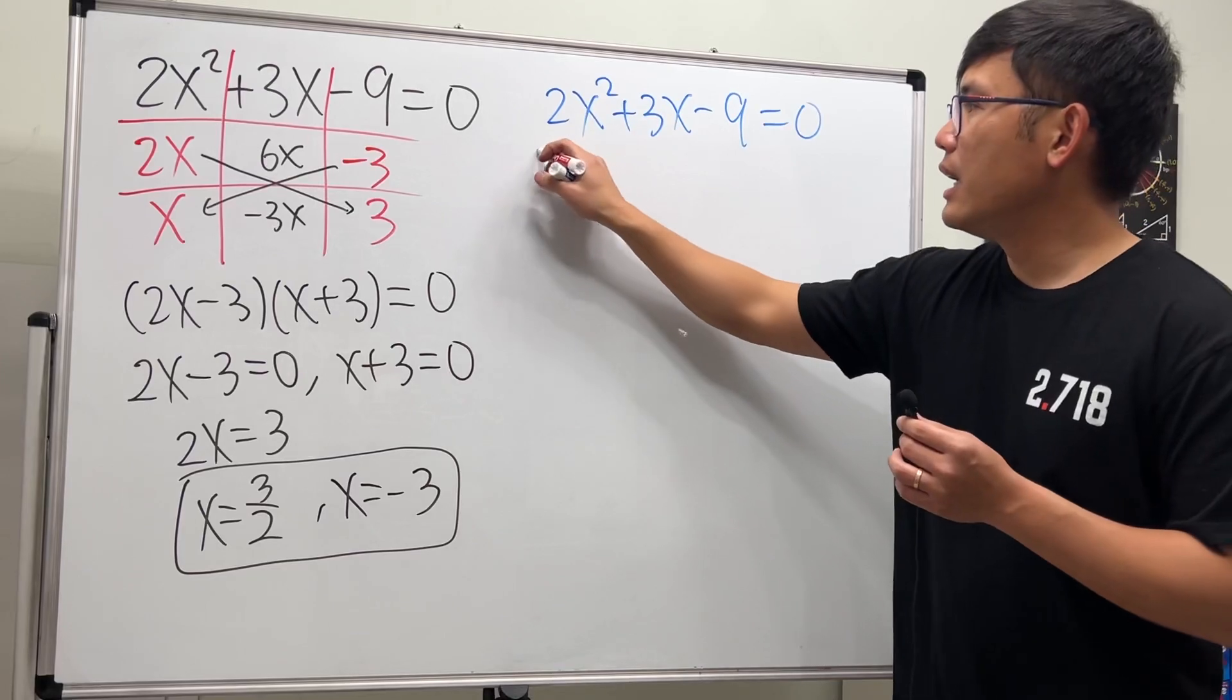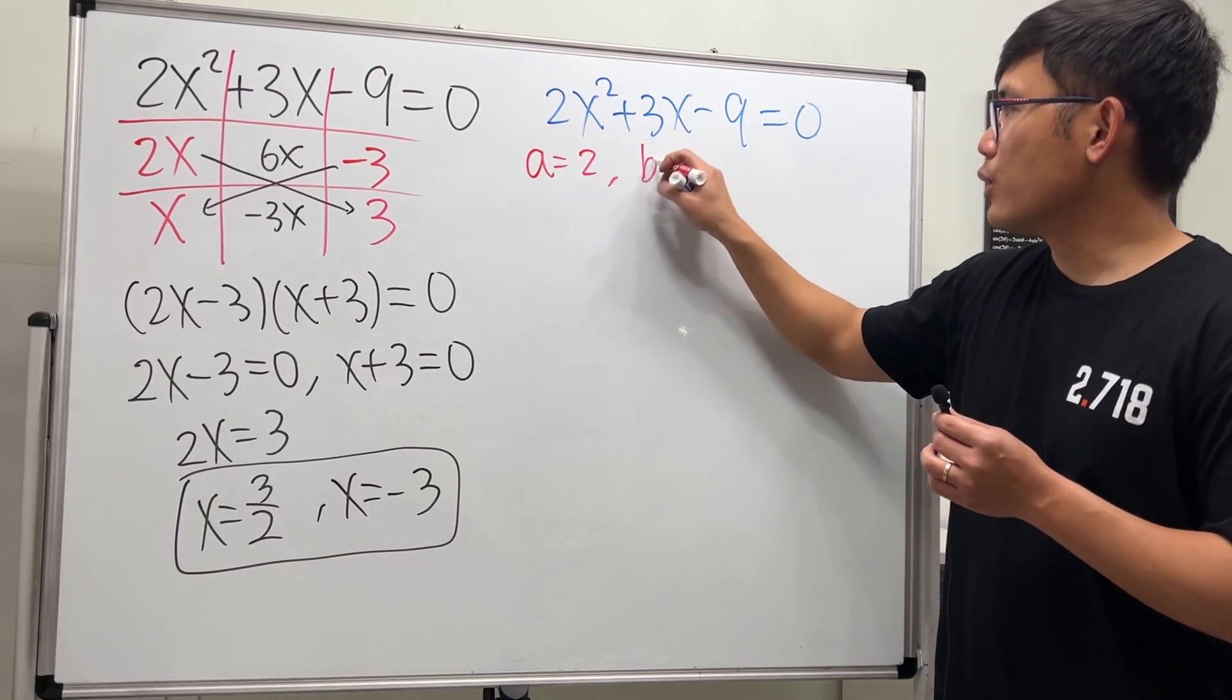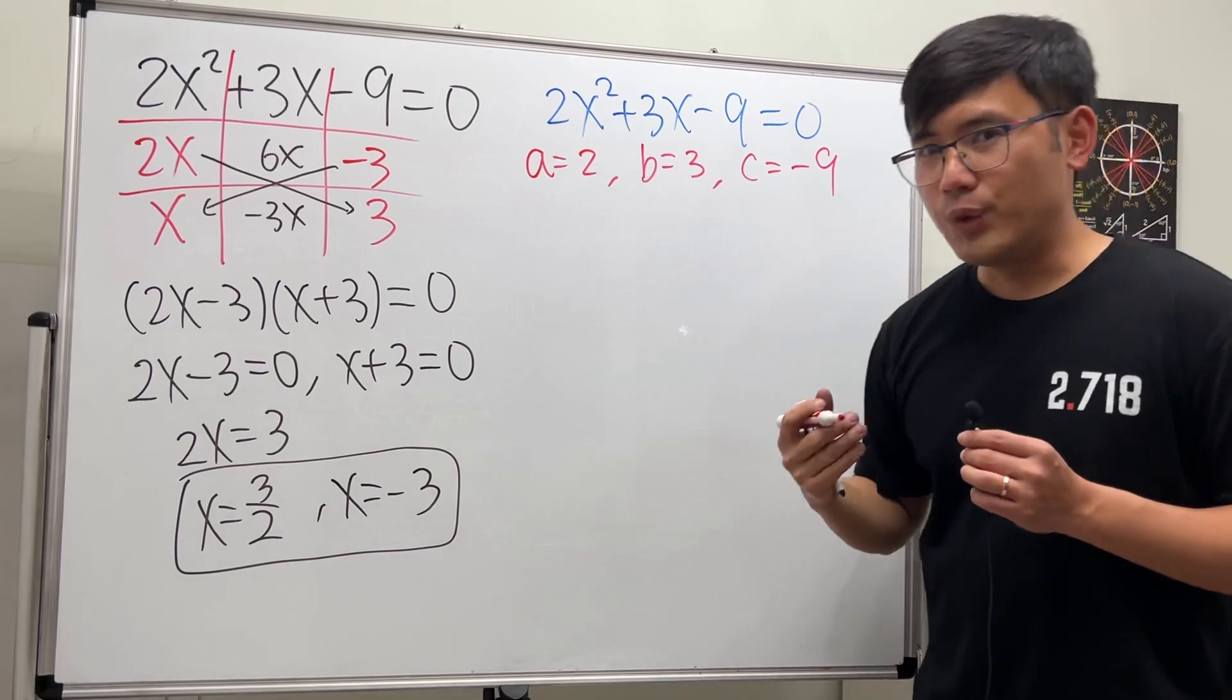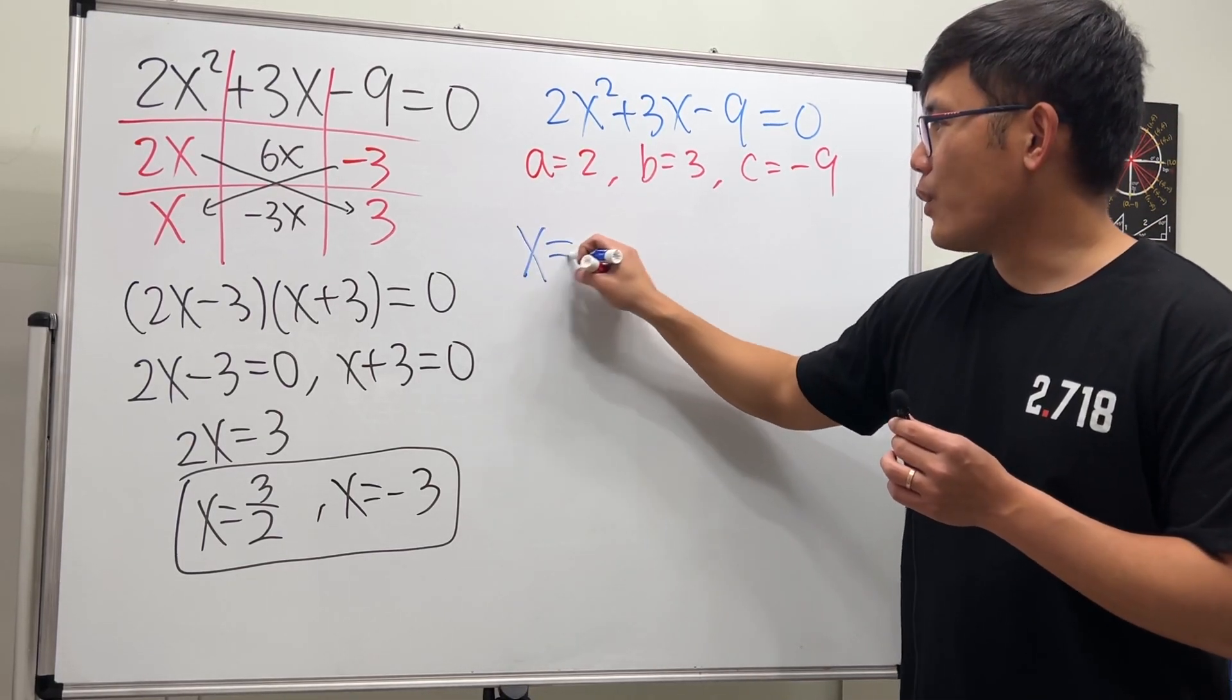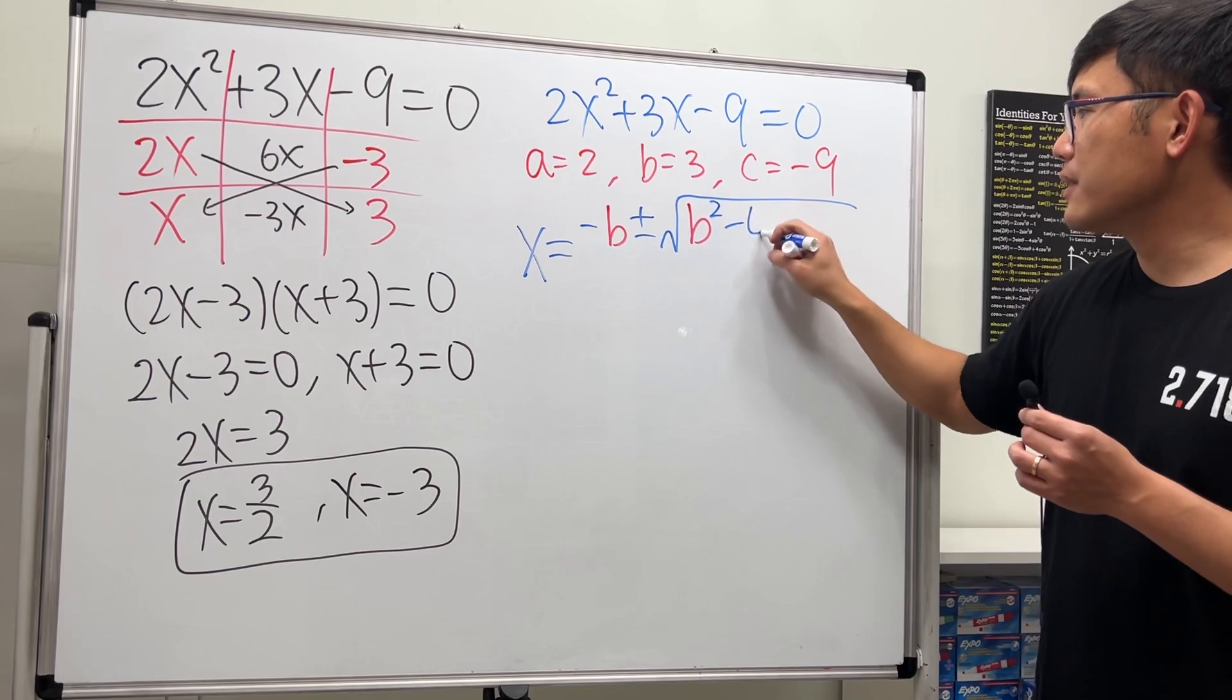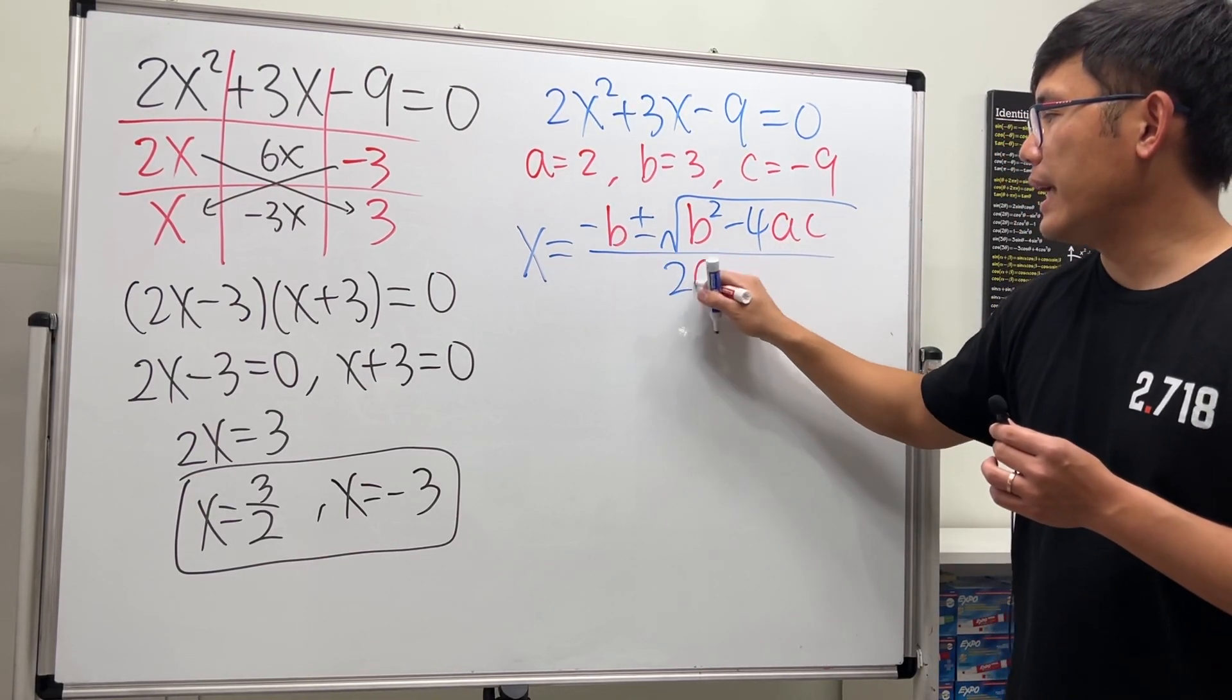Then we can proceed. a is the coefficient of x squared, which is 2. b is the coefficient of x, which is 3. c is the constant term, which is negative 9. We will have to remember our quadratic formula: x equals negative b plus or minus square root of b squared minus 4ac, all over 2a.